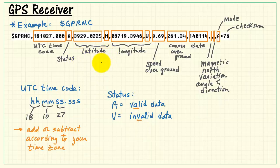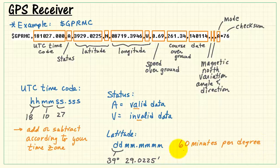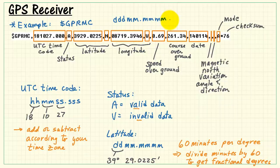We have the latitude, and the latitude is two characters for degrees, and the remaining characters are in minutes, with whole minutes and then fractional minutes. In this case, we have 22.0225 minutes. We have 60 minutes per degree. If you want to convert the whole thing into degrees, you want to divide the minutes by 60, and then add that value to the whole number of degrees. Latitude can be either north or south. Longitude can be either east or west. It's very similar to latitude. The only difference is that we have three characters for degrees.